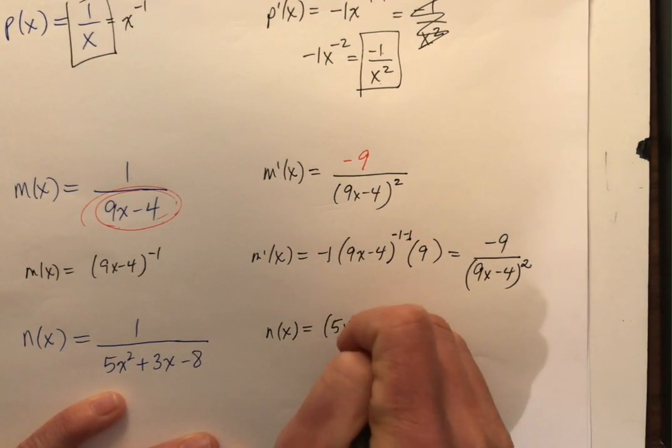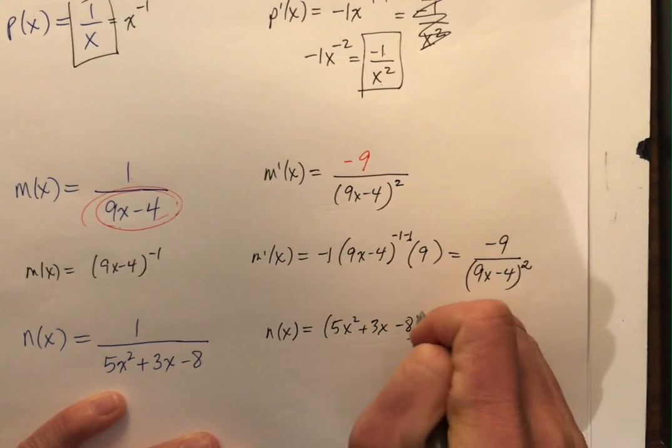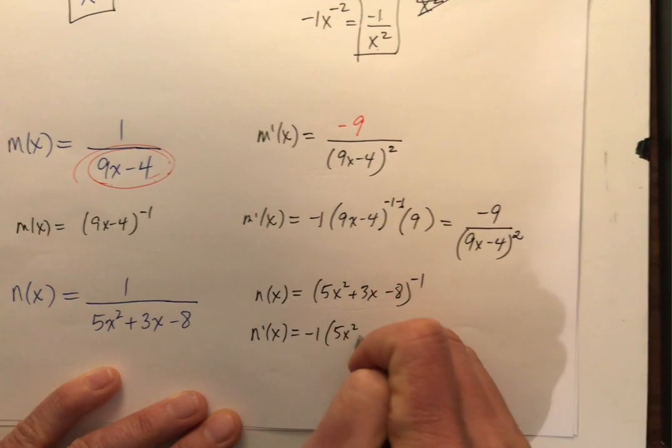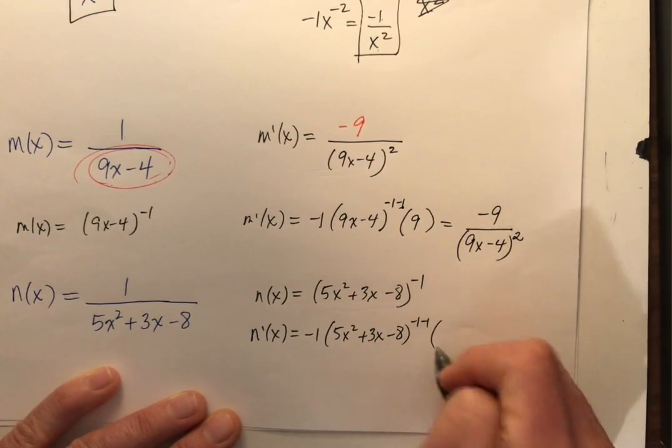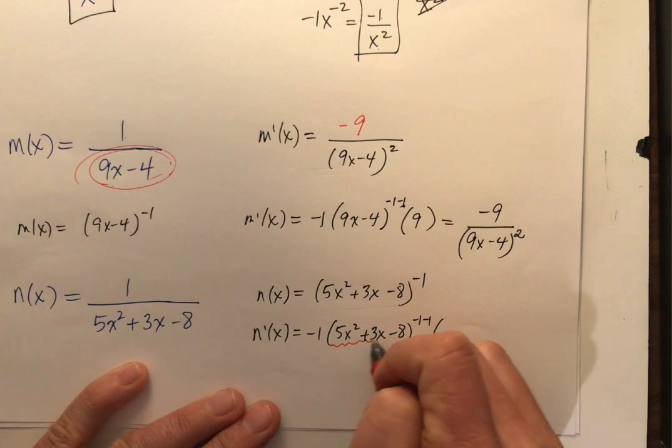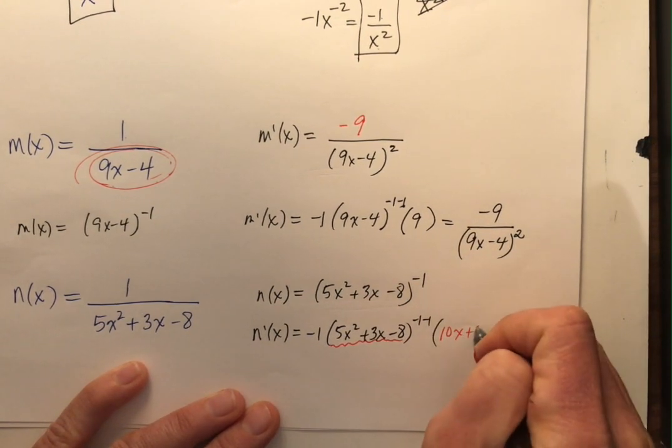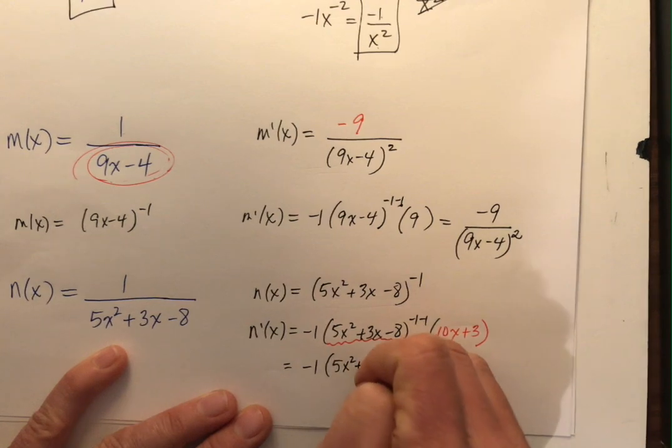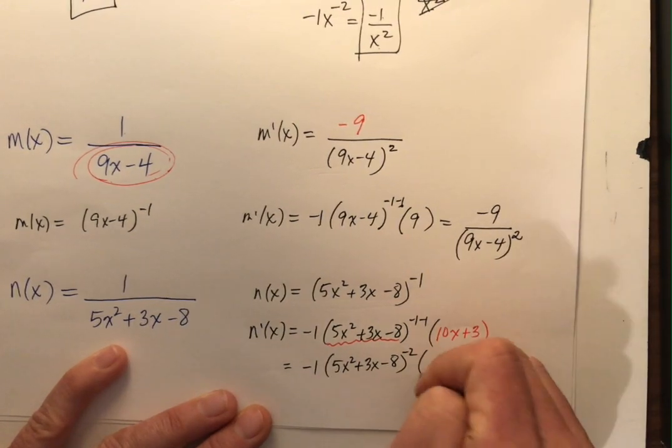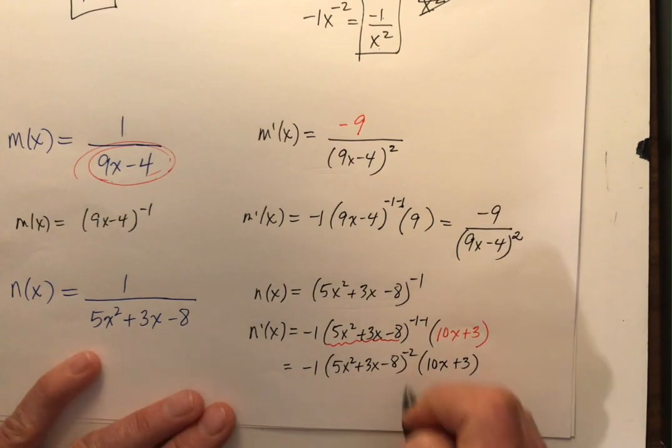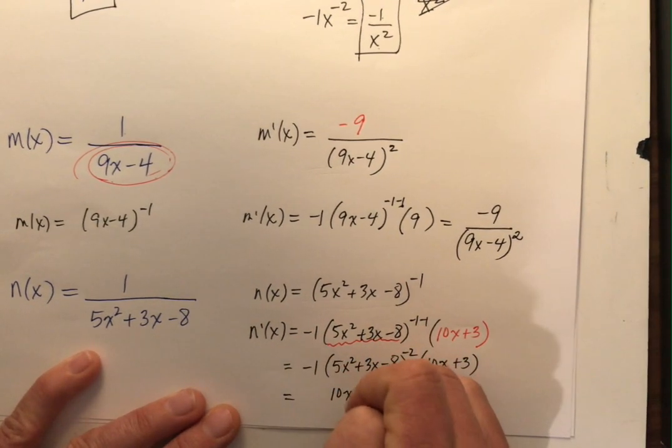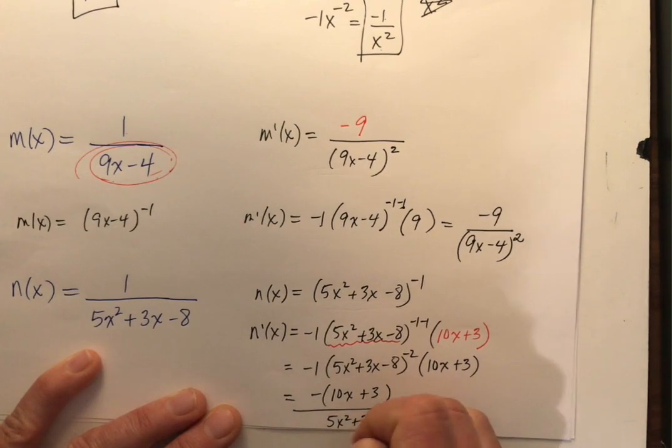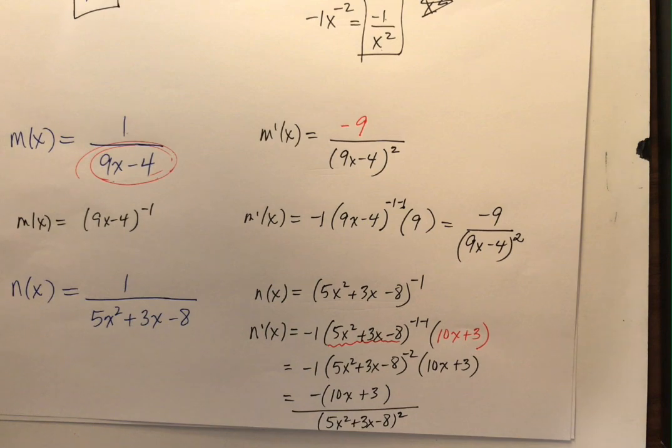Let's give n of x a try. I'm going to rewrite n of x as 5x squared plus 3x minus 8 to the negative 1 power. So n prime of x is going to be negative 1 times 5x squared plus 3x minus 8 to the negative 2 times the derivative, 10x plus 3. So flip it up. Negative 1 times 5x squared plus 3x minus 8 to the negative 2nd power times 10x plus 3. Put it all together. Get rid of negative exponents. 10x plus 3 times a negative 1 all over 5x squared plus 3x minus 8 squared. Holy cow.